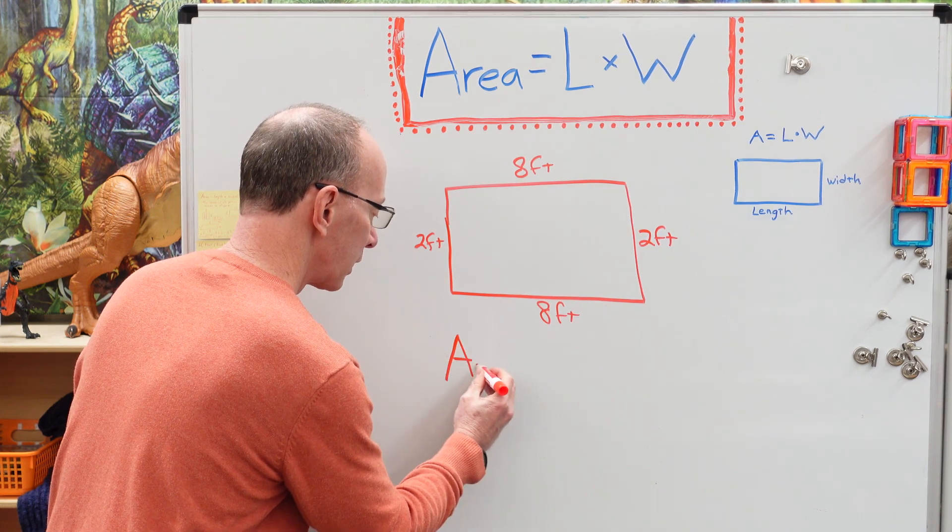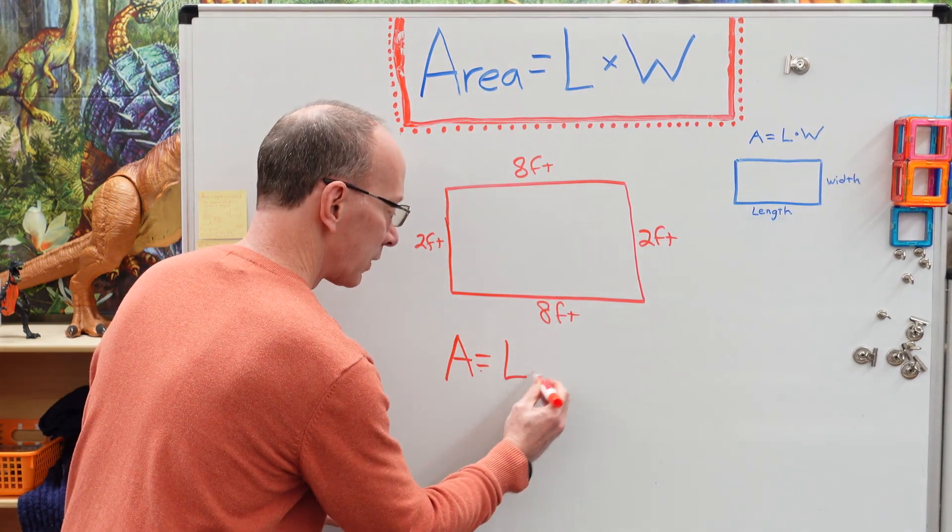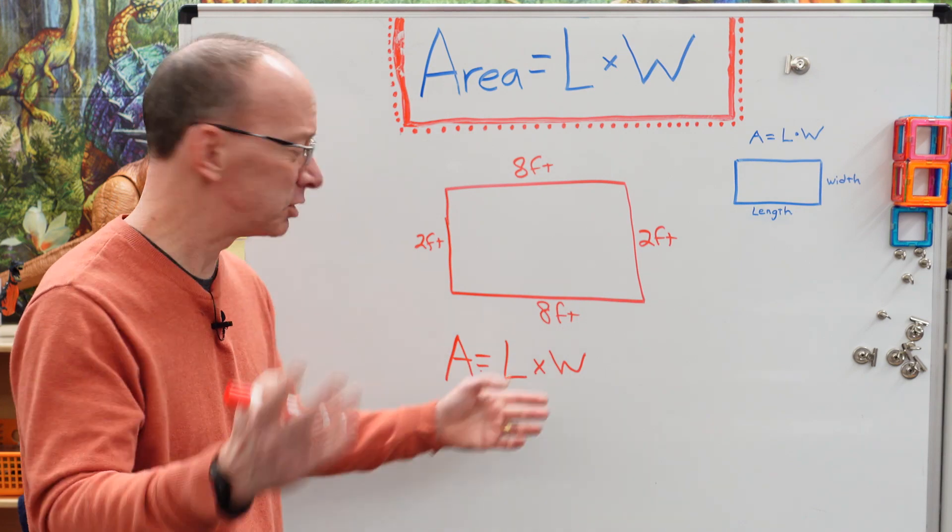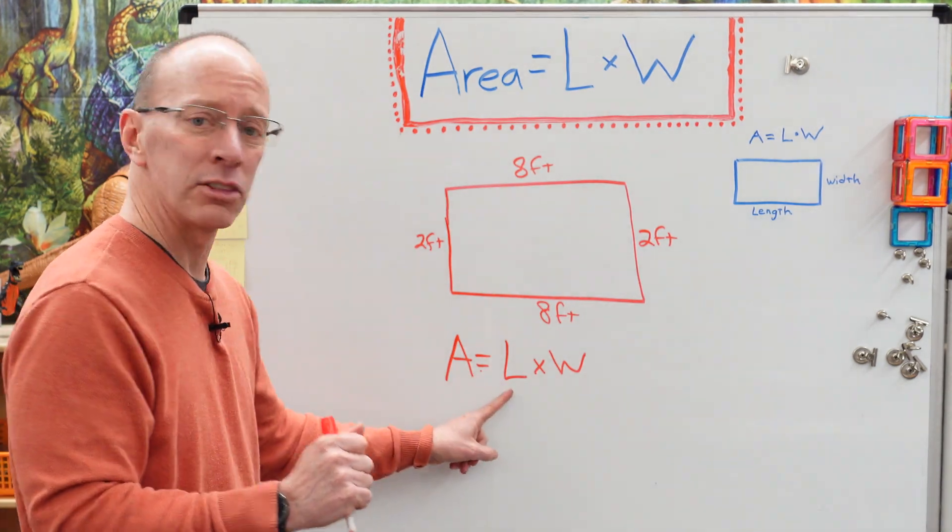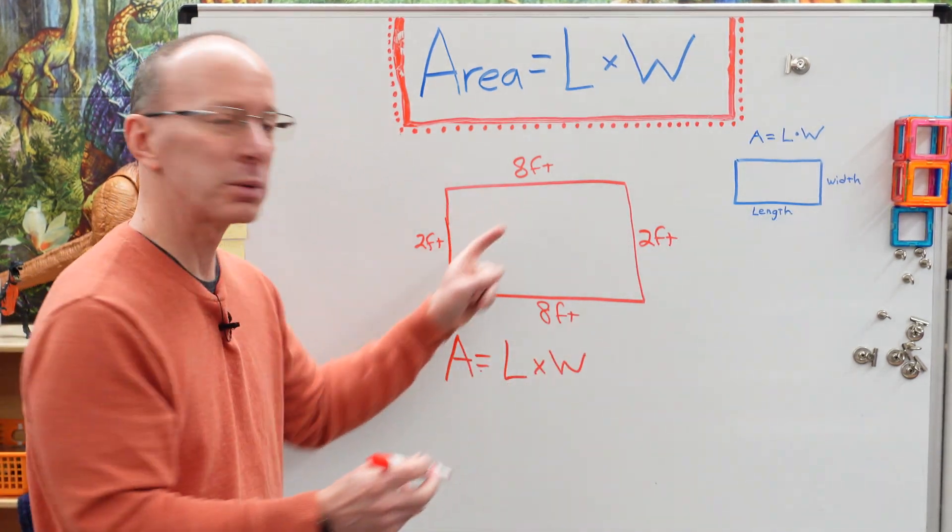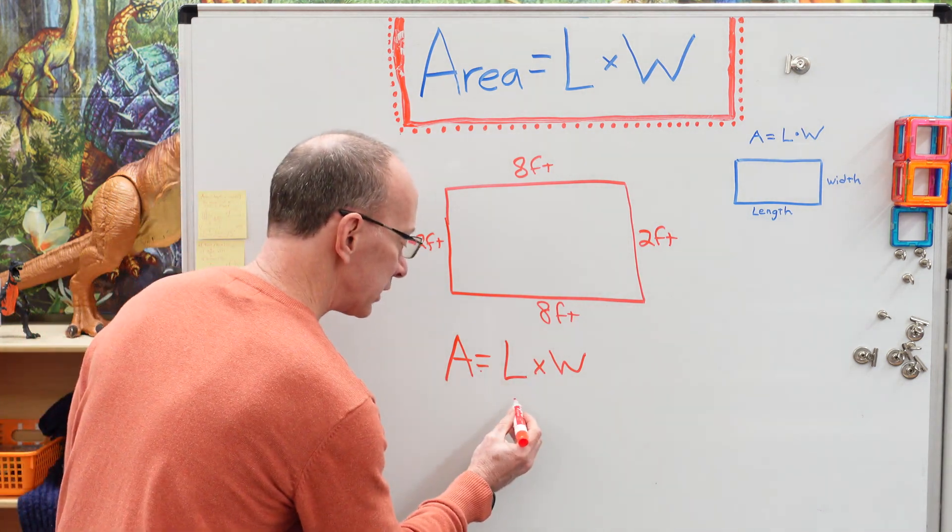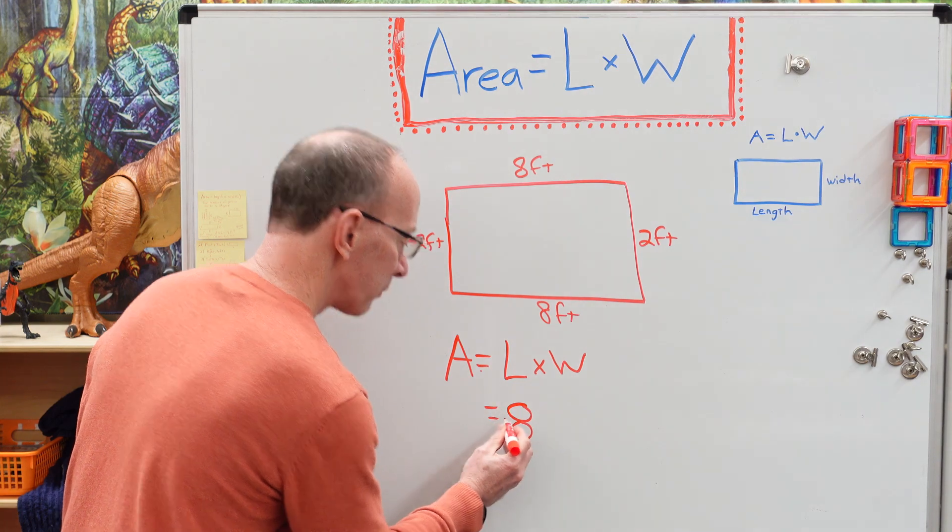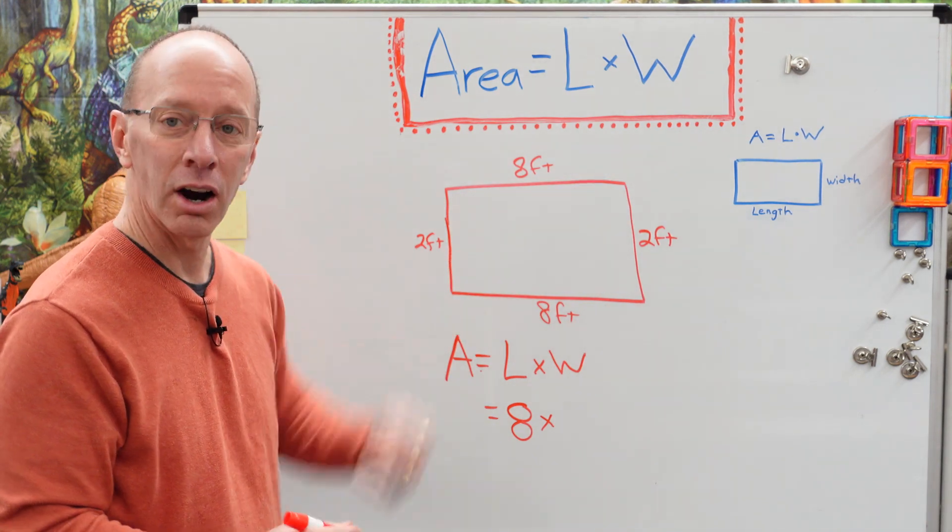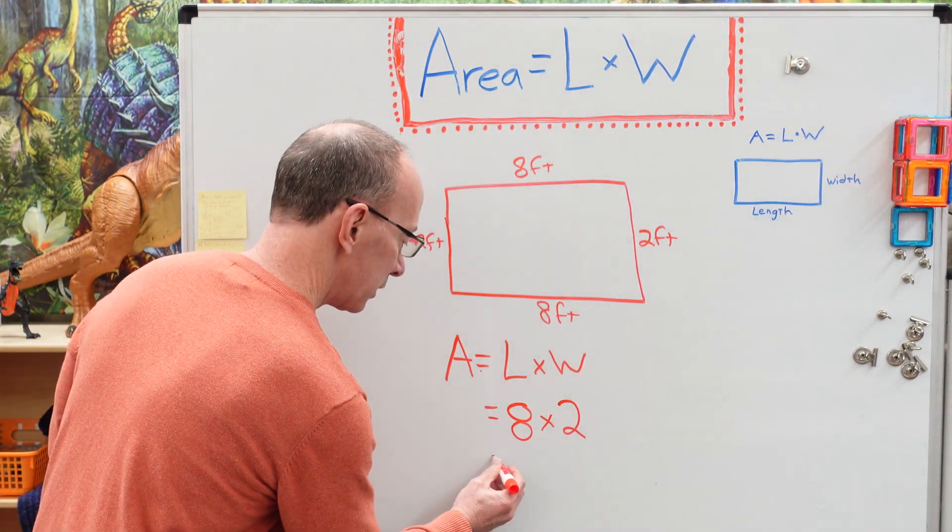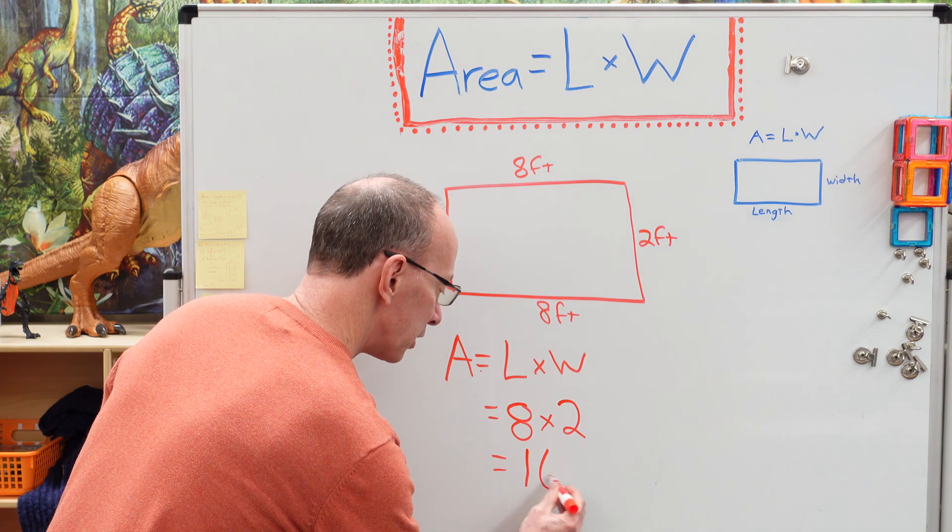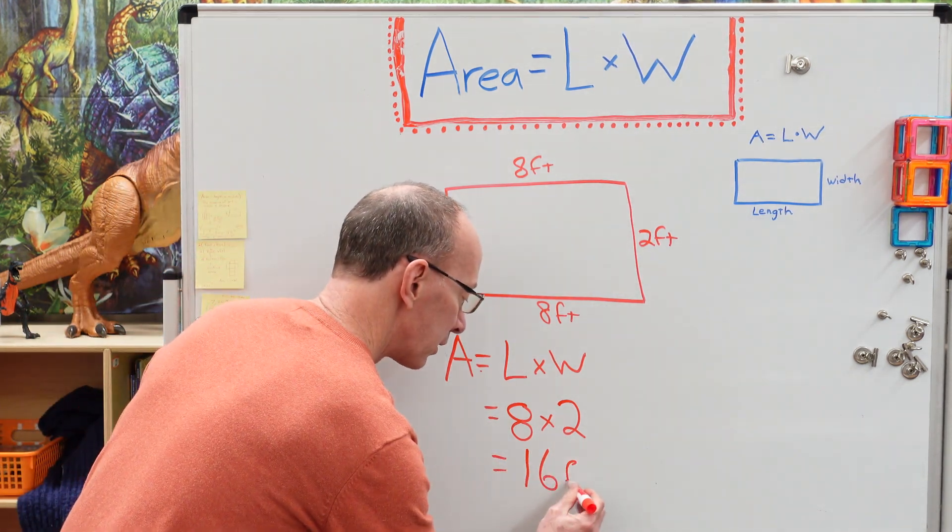So that would be area equals length times width. Don't get too scared about this. Just do what you're usually doing. Length. What is it? Eight feet. All right. Now, if you want to, you can put eight feet or you can just put eight and then we can always put the feet later on in our answer. Whatever you want to do, whatever makes it easier. So I'm just going to go ahead and put eight right here times two feet. All right. That is our width. So I'm going to go ahead and put two right here. All right. What is eight times two? 16. Now, this is where I'm going to put in my units of measure. 16 squared feet.